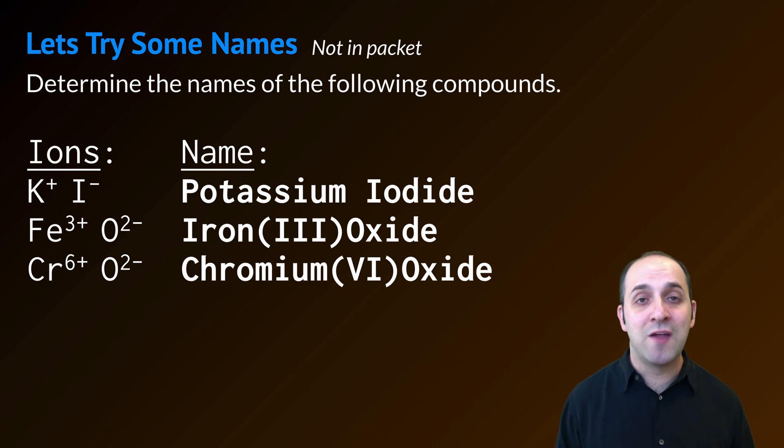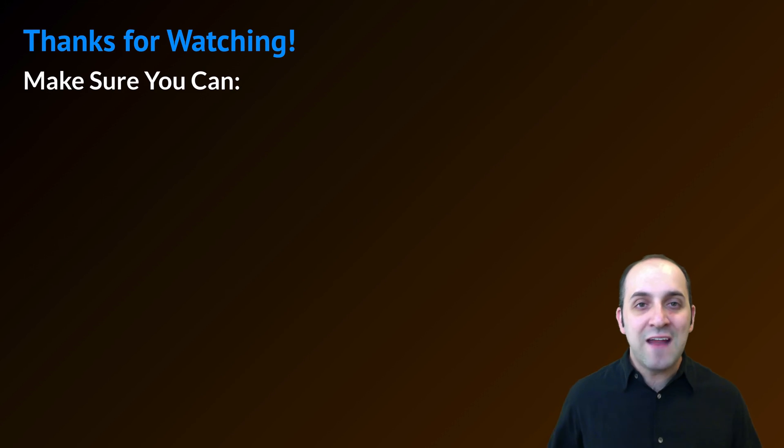Similarly, chromium has more than one possible positive oxidation state. So in this case, it's chromium six oxide since chromium is 6+. Do these make sense? If they don't, take a moment and write down any questions that you have before we move on.